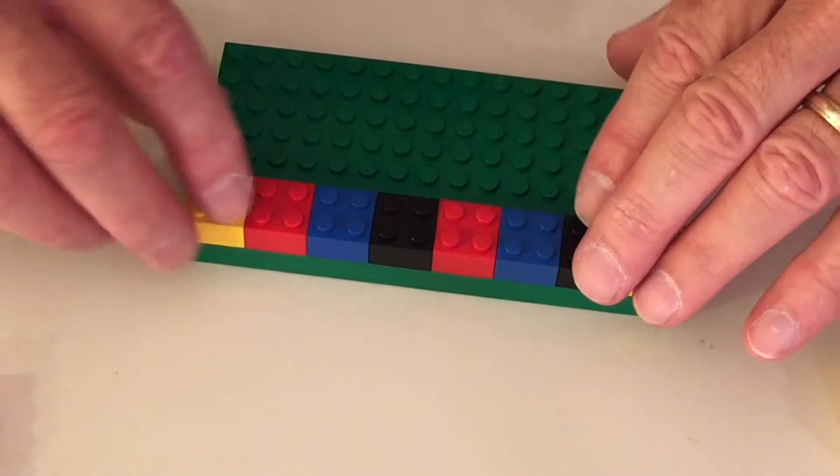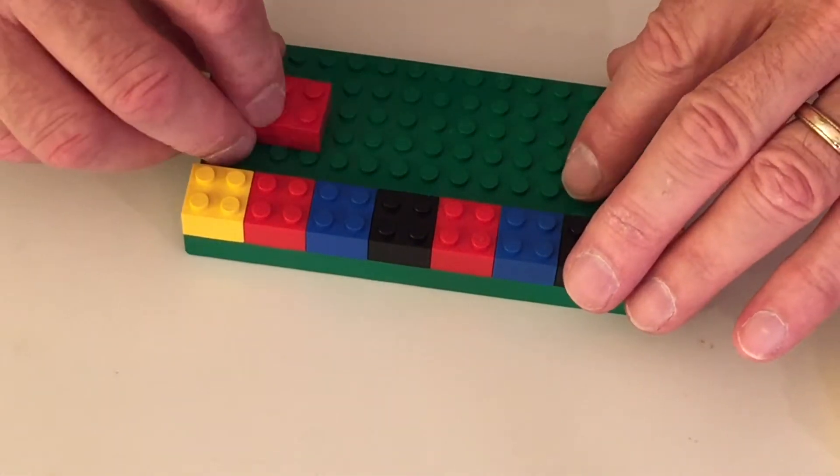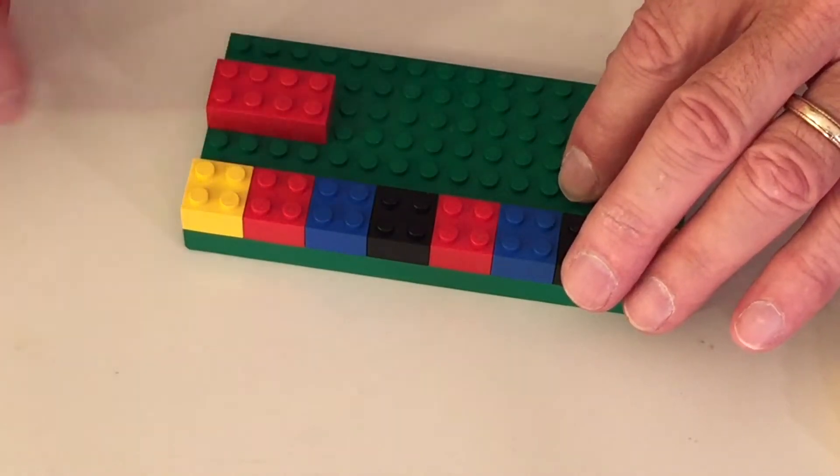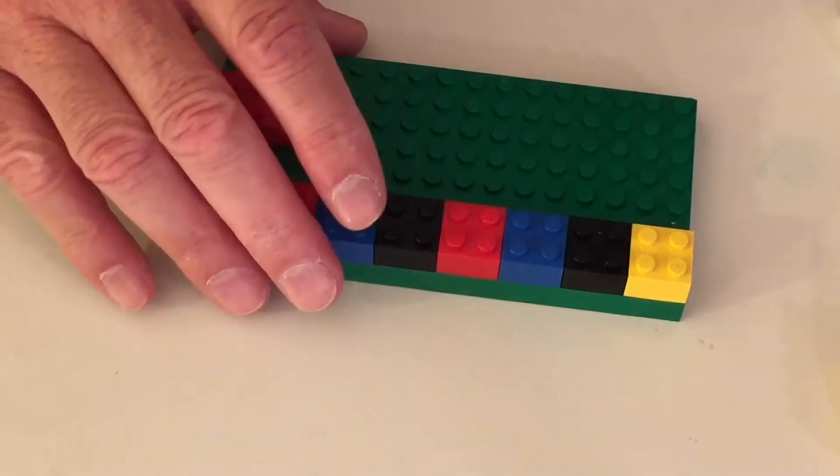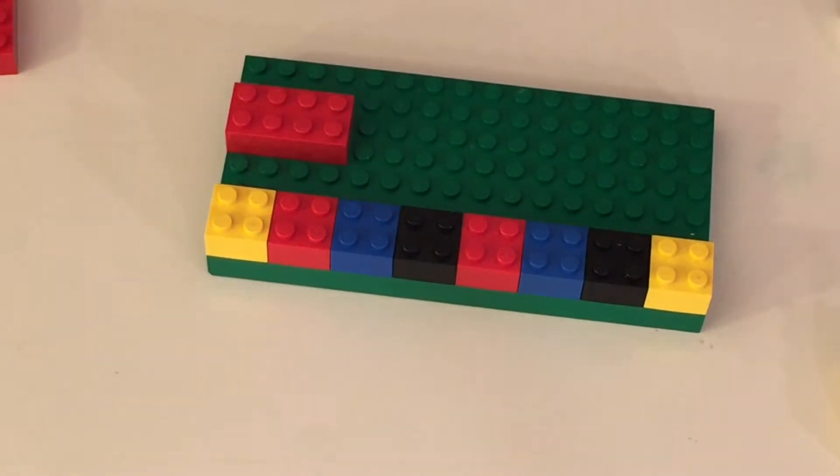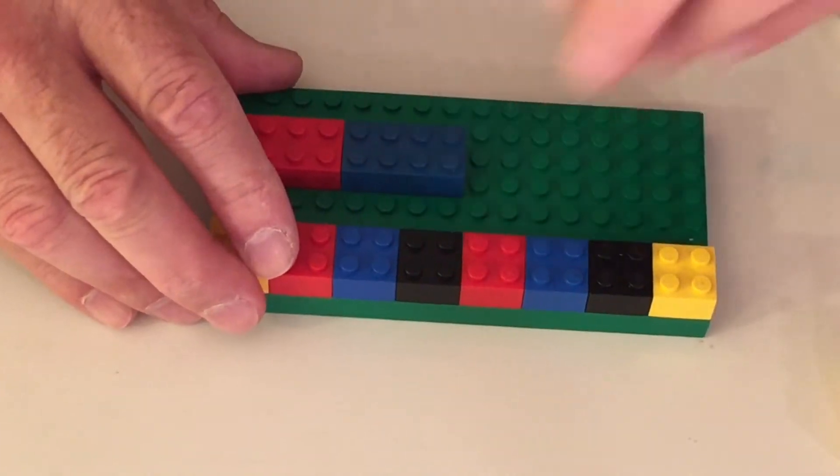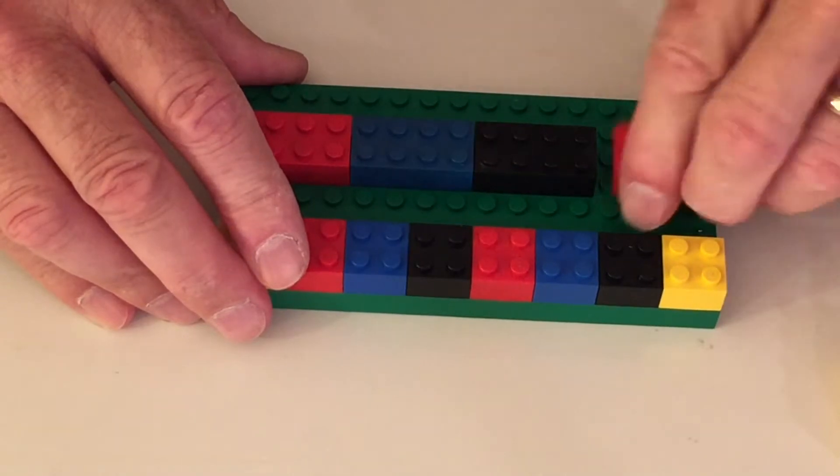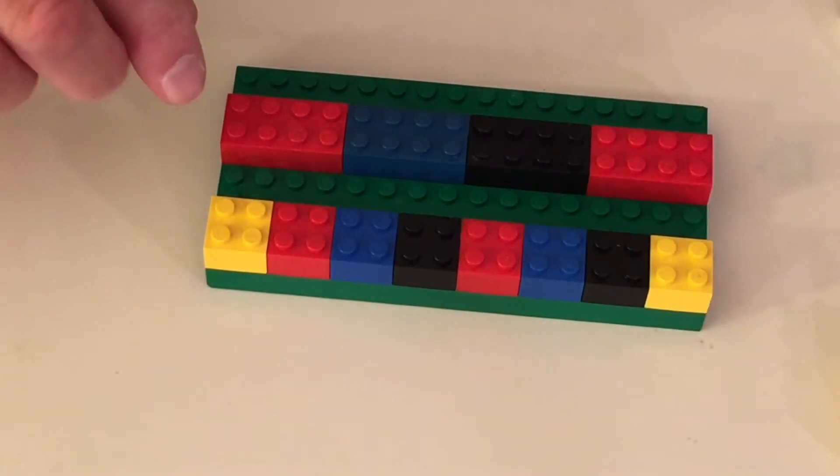But what if we switch the numbers around a little bit and if I got mixed up and I started to put down eight dot blocks? What if I put down four eight dot blocks instead of eight four dot blocks? Let's see what happens. So here is one eight dot block. Here's another eight dot block. Here's three and here's four. Look, they're the same length. They're the same size.